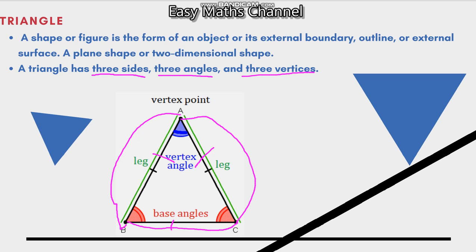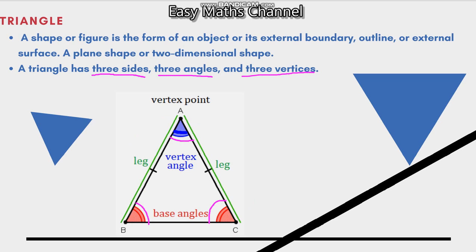A is a figure, so 3 sides. What do we say? 3 angles — A, B, C — these are 3 angles. For vertices: A is a vertex, B and C — what is the vertex? 3. Yes, this is 3 vertices. If we take a triangle, this is 3 legs.